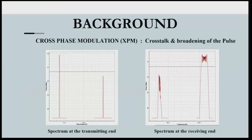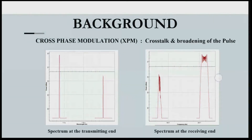This broadening affects long-haul optical communication systems and also exhibits crosstalk between the channels. The cross-phase modulation strength increases with the increasing number of channels. As we increase the number of channels, the wavelengths also increase, and thus the crosstalk keeps increasing.